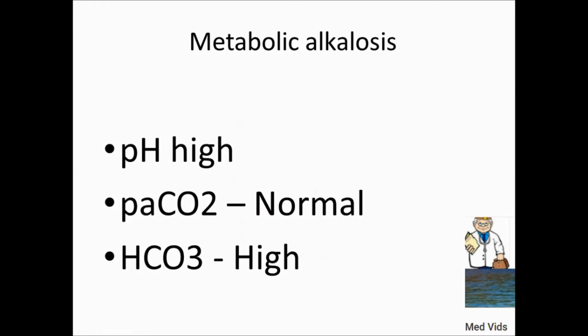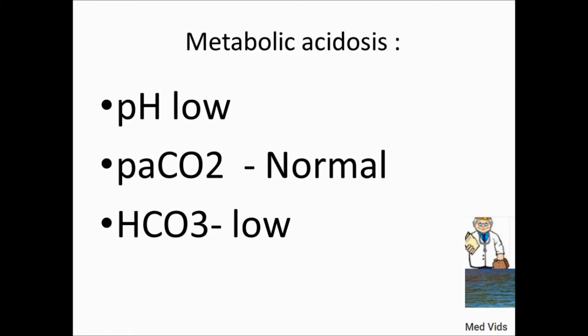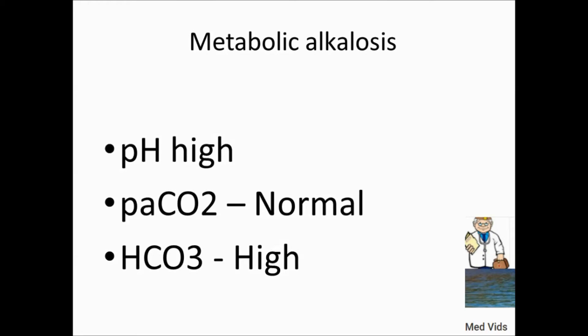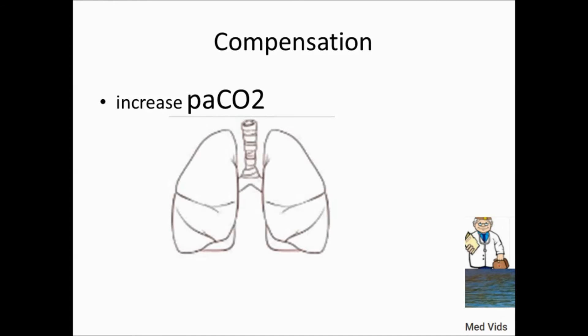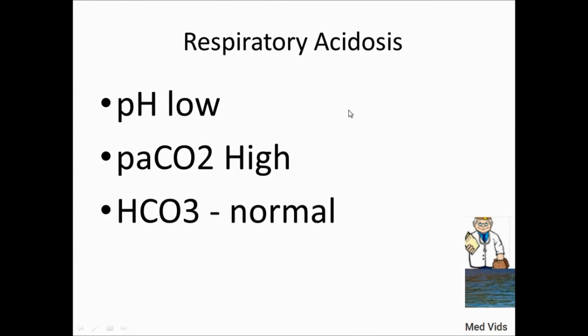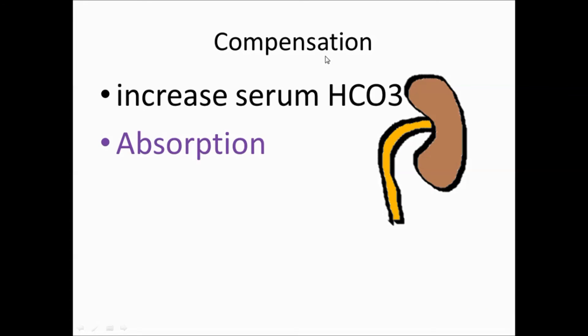Examples of metabolic acidosis include hyperkalemia, DKA, and other anion-gap metabolic acidoses. Metabolic alkalosis examples include volume contraction states such as hyperaldosteronism and vomiting.